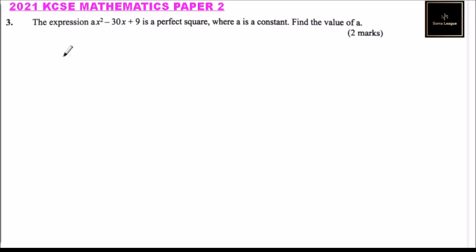A perfect square is one that you can write as (bx + c)² where b and c are constants. For example, we can write expressions like (2x + 1)² as a perfect square.